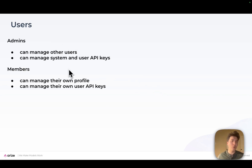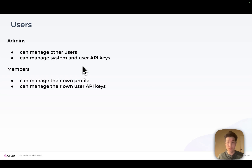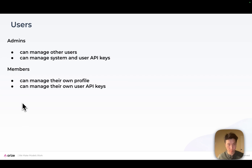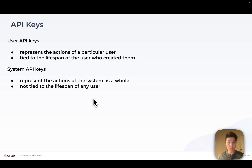Admins have more power in the system. They can manage other users — create, delete, update other users. They're also able to manage system and user API keys, regardless of whether or not they were the ones who created those keys. Members, on the other hand, are only able to manage their own profile — change their own username or password — but they can't change other people's credentials. Members can manage their own user API keys, but they can't create system API keys, and they can't create or delete other users' user API keys.